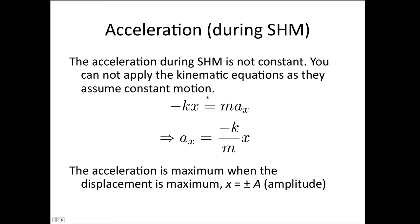However, we can use Hooke's law. So we know that F is equal to minus kx, and that's equal to m times a. So that tells us that the acceleration, in this case in the x direction, is equal to minus k over m times x.